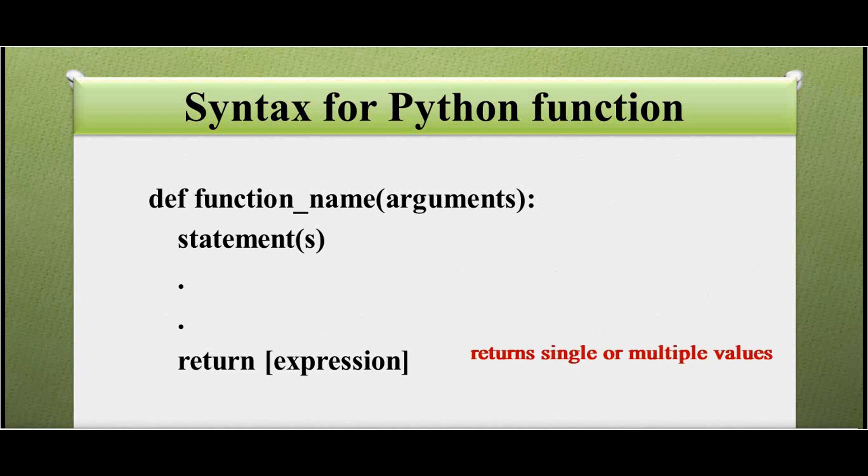The Python function may return a value or multiple values. It can also have multiple return statements. When any one of them is executed, the function will terminate. If there is no return statement, then it returns None value.